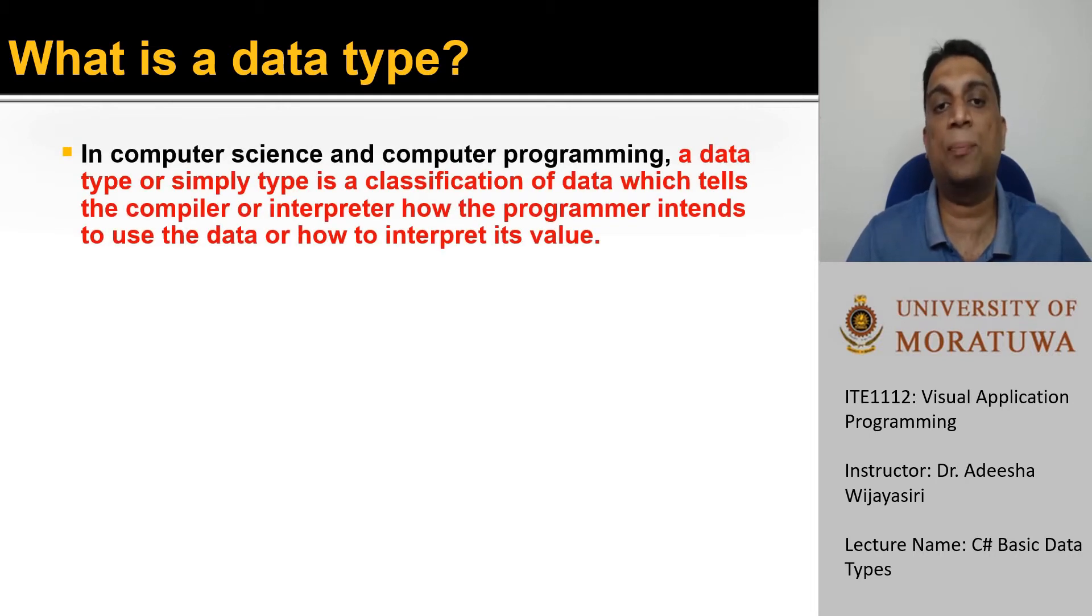In Computer Science and Computer Programming, a data type is a classification of data which tells the compiler or interpreter how the programmer intends to use the data or how to interpret its value.